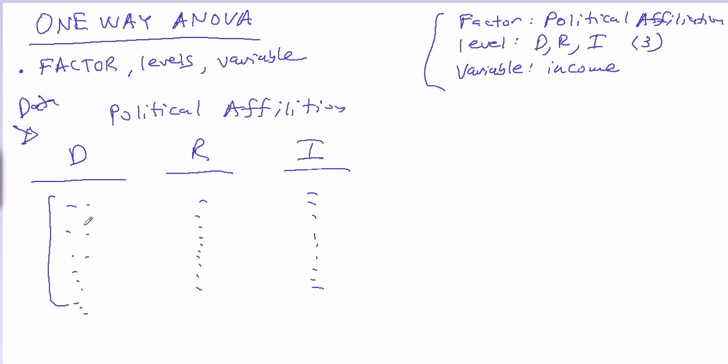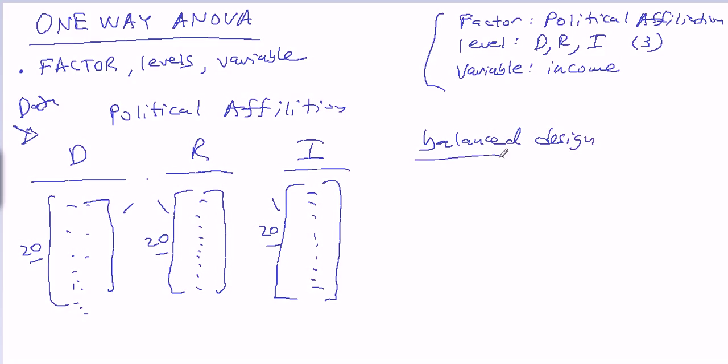So that's the basic framework of what a one-way ANOVA study could look like. Now, if we limit the number of observations we take, if we take the same number of observations in each of the groups, in this case, there's three groups. So if we say, if I'm going to take 20 people, 20 Democrats, if I'm going to sample 20 Democrats, I'm going to sample 20 Republicans and 20 Independents. If I make this kind of rule for myself, then this is called a balanced design. So this experiment is being done in a balanced way. And that makes things a lot easier down the line with the formulas and the calculations and so forth.